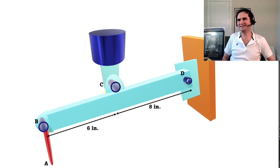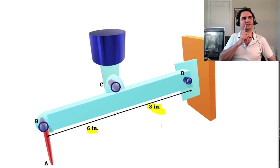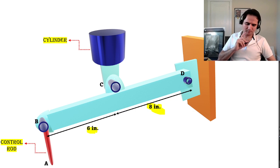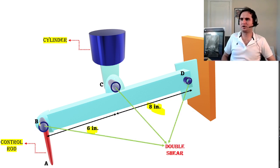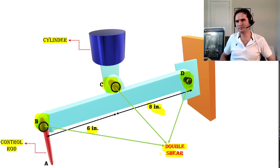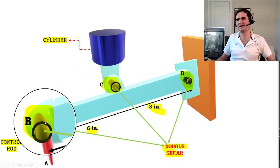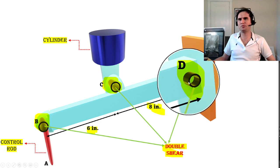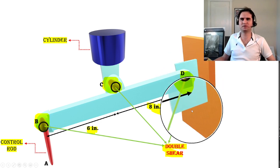C is 6 inches from B and 8 inches from the fixed support D. The cylinder is at C, and at B we have the control rod shown in red. All three bolts — at B, at C, and at the fixed support D — are in double shear.